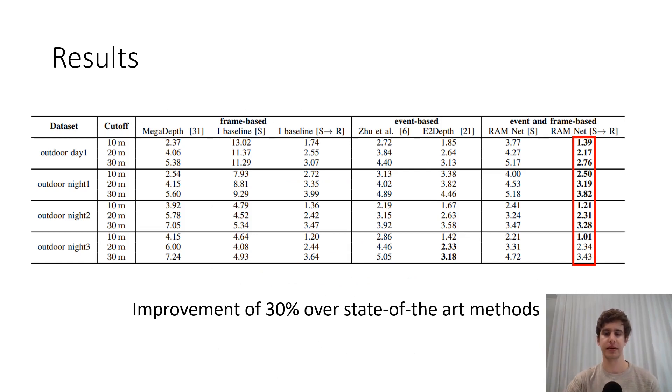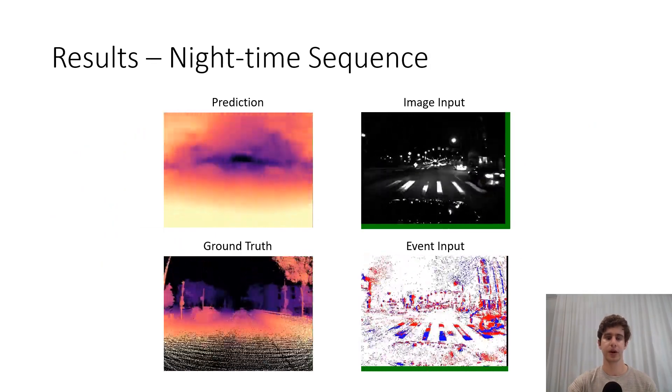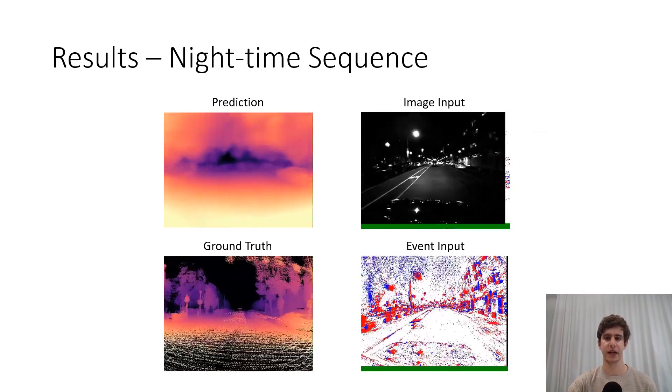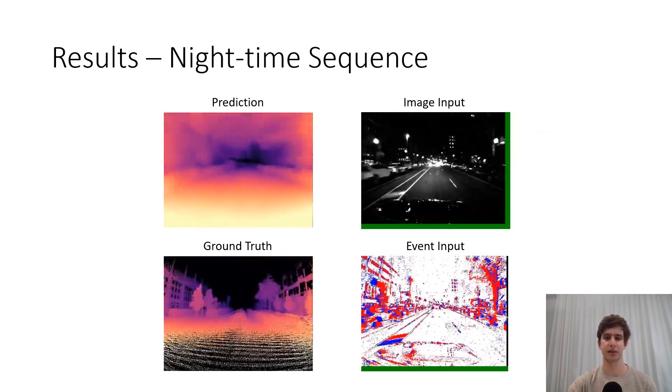Furthermore, we compare our method on real data, where we show a 30% reduction in error rate compared to state-of-the-art methods. Finally, by leveraging the properties of event cameras, we can now envision applications in challenging low-light scenarios such as driving at night.